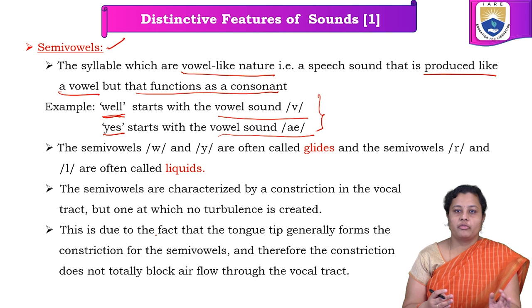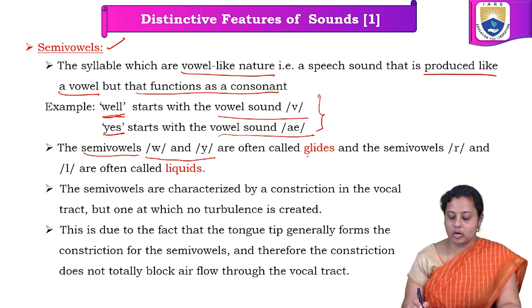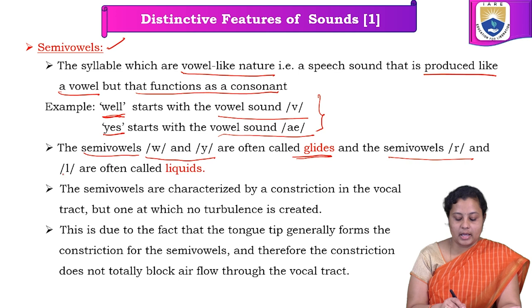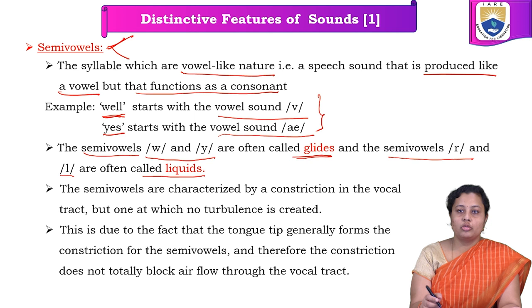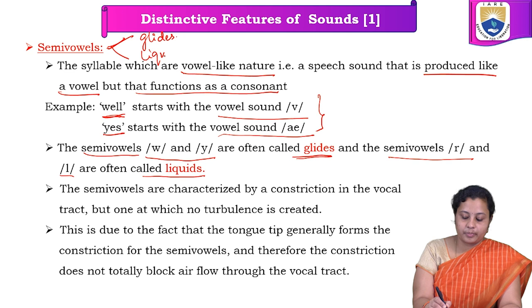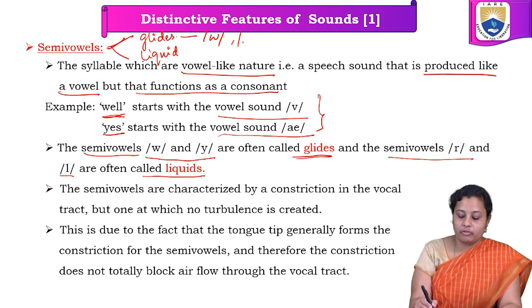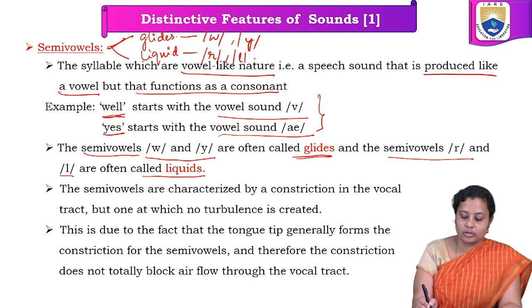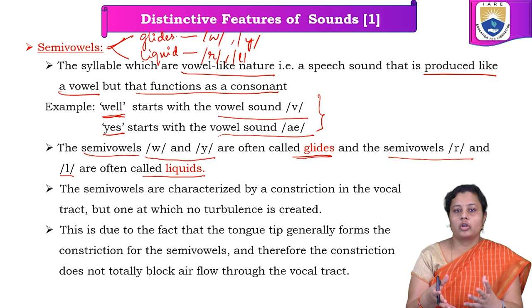There are four types of semi-vowels. The 'va' and 'ya' sounds are often called glides, and the 'r' and 'l' sounds are often called liquids. So semi-vowels can be divided into two types: glides and liquids. Glides have the 'va' and 'ya' sounds, and liquids have the 'r' and 'l' sounds. Now, how are they characterized? Semi-vowels are characterized by a constriction in the vocal tract but with no turbulence created.